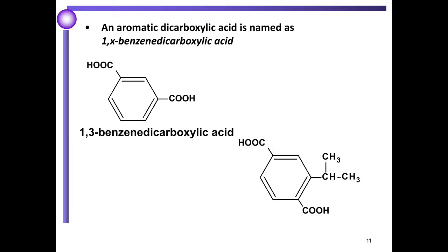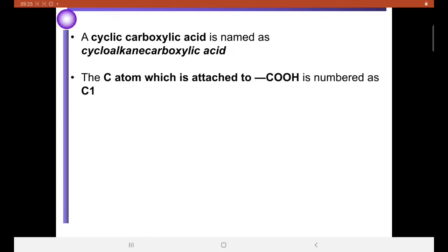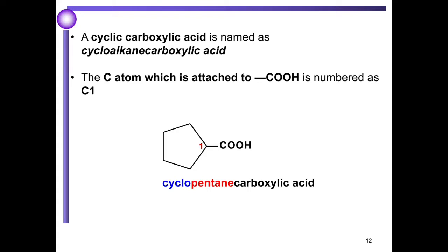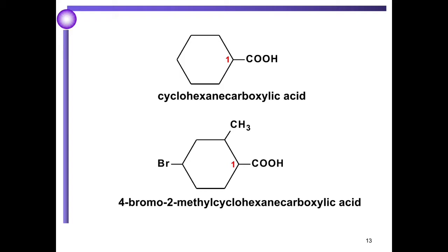The next example is 2-isopropyl-1,4-benzene dicarboxylic acid. A cyclic carboxylic acid is named as cycloalkane carboxylic acid, and the carbon atom attached to the COOH is numbered as C1. Examples: cyclopentane carboxylic acid, cyclohexane carboxylic acid, and 4-bromo-2-methyl-cyclohexane carboxylic acid.